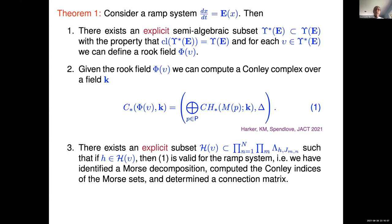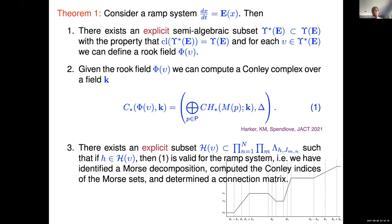The third part of this theorem is that there's an explicit subset of the H values — the widths of the ramp regions — such that if you choose a ramp function with H values in this subset and you've done this computation, then you've identified a Morse decomposition, computed Conley indices of the Morse sets, and determined a connection matrix. In other words, the information that comes out of this algorithm is actually the information that Bob Franzosa would have computed in his thesis. Therefore, because this information is the same as the connection matrix information, I claim I have solved the differential equation.